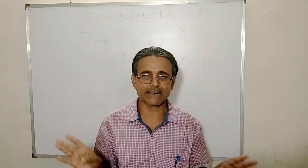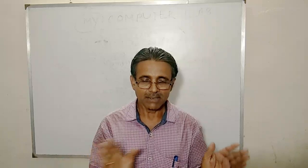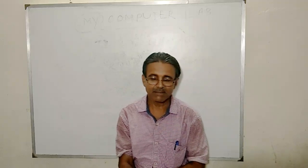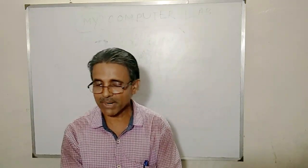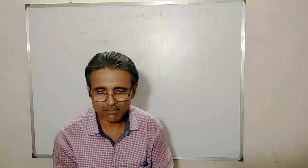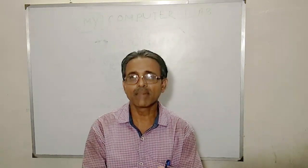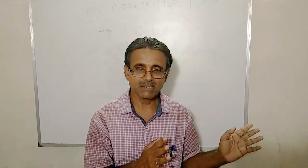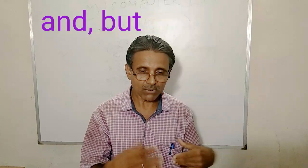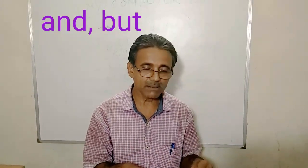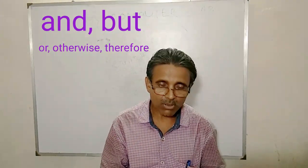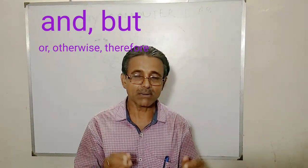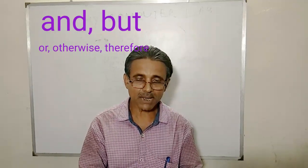There are so many conjunctions we use in English. In your grammar book you can find these conjunctions. Some conjunctions I will present before you: 'and,' 'but,' 'or,' 'otherwise,' 'yet,' 'therefore.' There are also some co-relative conjunctions: 'not only...but also,' 'either...or,' 'neither...nor,' 'both...and.' These are called co-relative conjunctions.